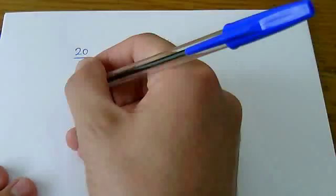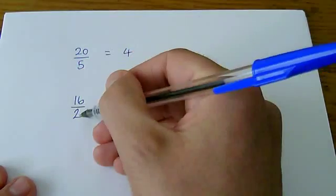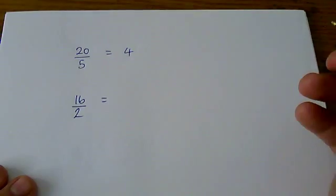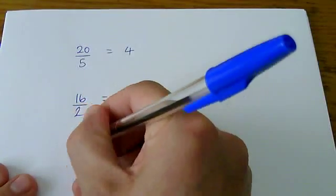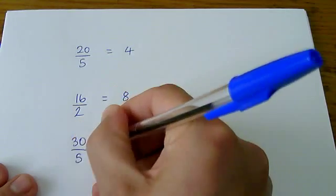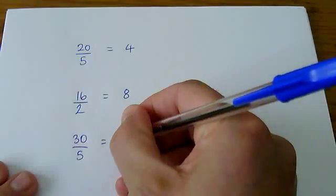If we look at another one, 16 over 2, that's how many 2s go into 16. It's 16 divided by 2, it's 8. Finally, if we look at 30 over 5, that's 30 divided by 5, it's 6.